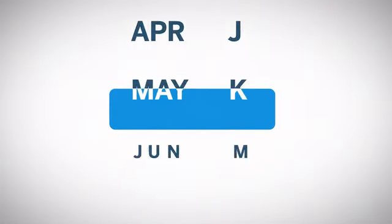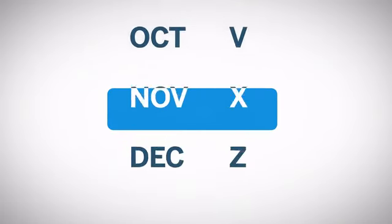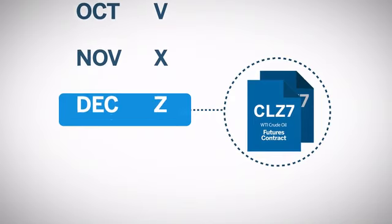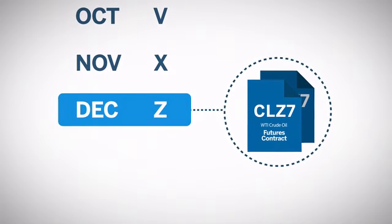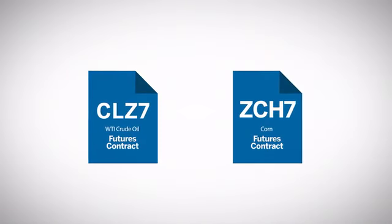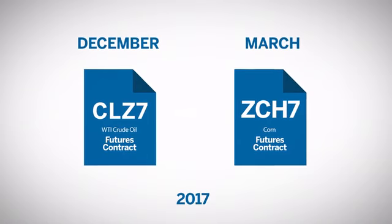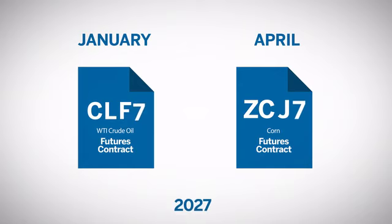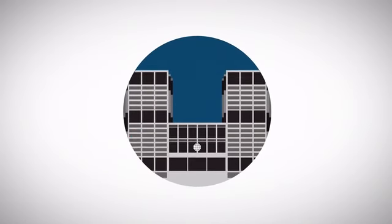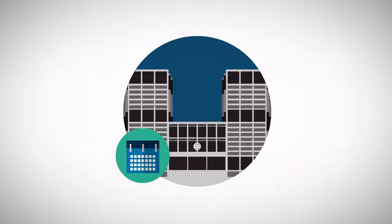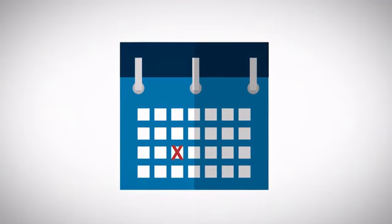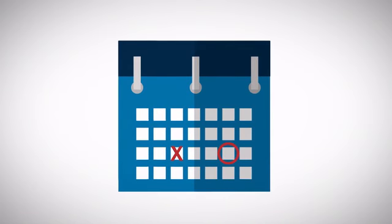Finally, every futures contract is referred to by its delivery month. Traders refer to the March corn contract or the December WTI contract, since this point in the future is germane to the value and execution of the contract position. Depending on the contract market, delivery can be anywhere from one month to several years in the future. The exchange specifies when delivery will occur within the month and when a given contract initiates and terminates trading. Typically, trading for a contract is halted a few days before the specified delivery date.